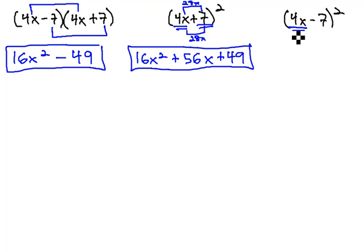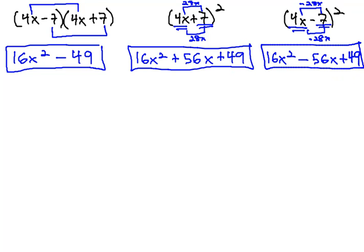we start by squaring the first term. 4x squared is 16x squared, and then we take the product twice. 4x times negative 7 is negative 28x, and another negative 28x gives us negative 56x. Finally, we square the last term. 7 squared is positive 49, and we have our solution.